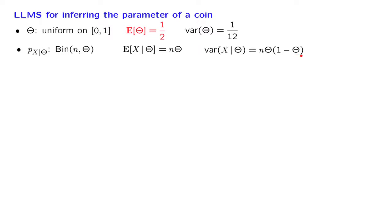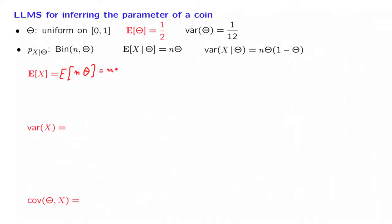Let us continue with the calculation of the quantities needed for the estimator formula. Let's start with the expected value of x. Since we know the conditional expectation of x, we can use the law of iterated expectations. The unconditional expectation is the expected value of the conditional expectation, which is n times theta. And since the mean of theta is 1/2, we obtain n over 2.